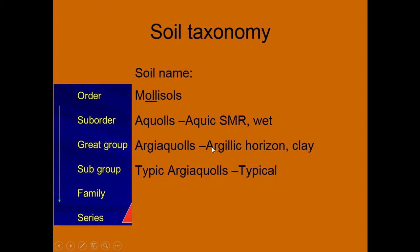So then we take the 'argi', making it an Argiaquoll. And then in the subgroup category there's sort of a flowchart of unique characteristics. This one doesn't meet any of those, so it's just a Typic Argiaquoll. And so just from the classification, we know that it has a clay deposit, a wet soil moisture regime, and it's a Mollisol — so it's one of our prairie soils with high organic matter near the surface. That's how soil taxonomy works, and a unique thing compared to plant taxonomy.